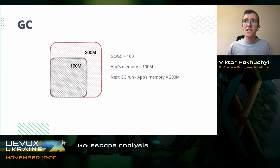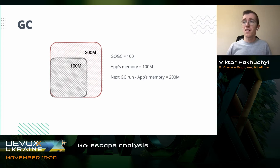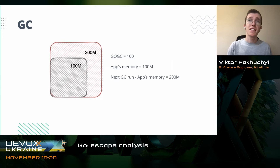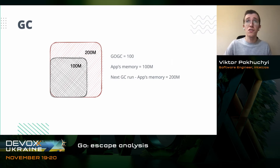In Java you have tens of options to configure GC, even different types of GC, so you can adapt it to your needs. But we don't have such an opportunity in Go. That's why we should think about it and try to find other options to manage our memory without direct control of it.